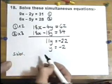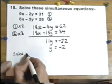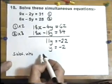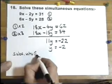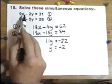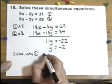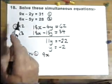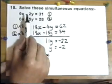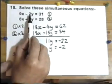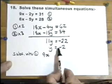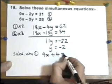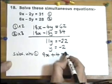I'm going to substitute into equation 1. So I look at equation 1 and say 9x minus 2y. Now again, minuses are going to cause some people problems. Minus 2 times minus 2, which is actually plus 4, equals 31.